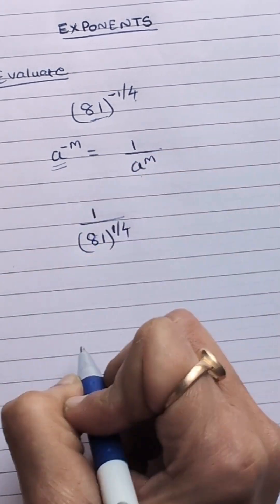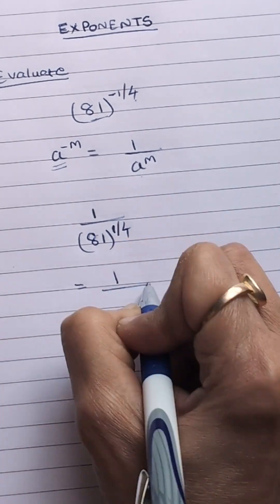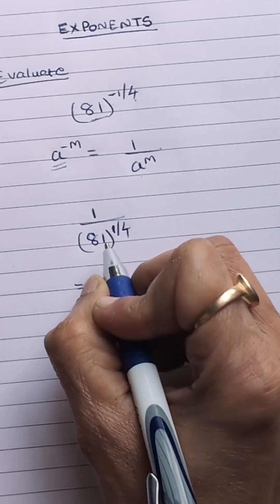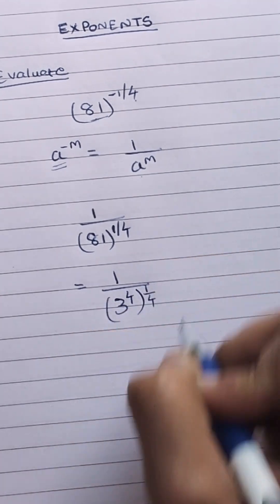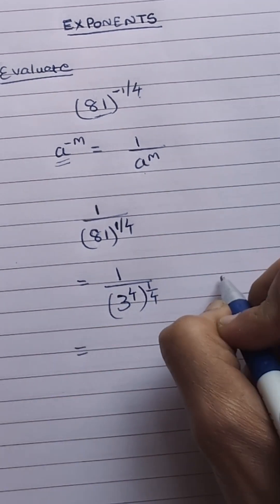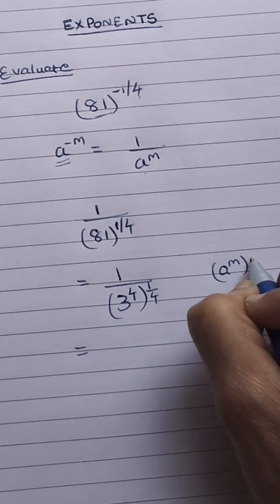Now 1 upon 81 is 3 into 3 into 3 into 3, so 3 to the power 4, whole to the power 1 upon 4. Now use the law: a to the power m whole to the power n is a to the power m into n.